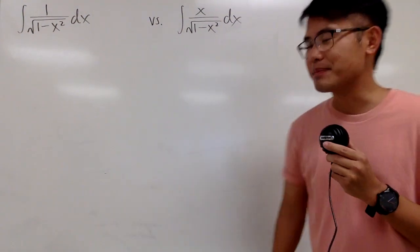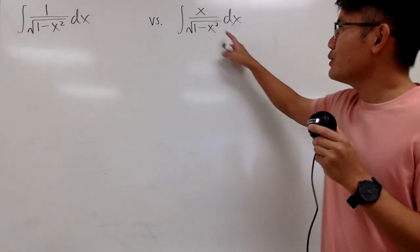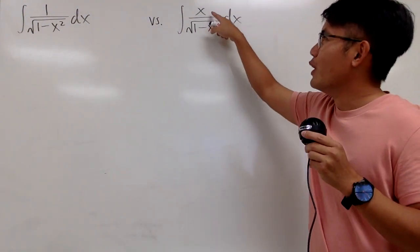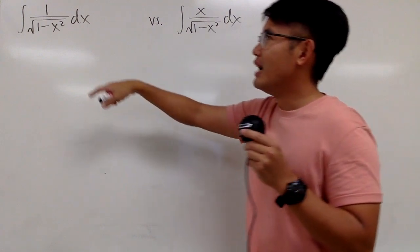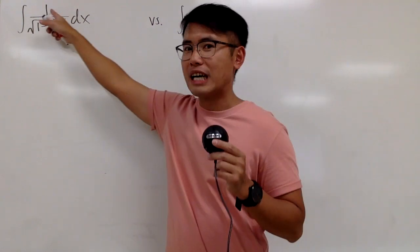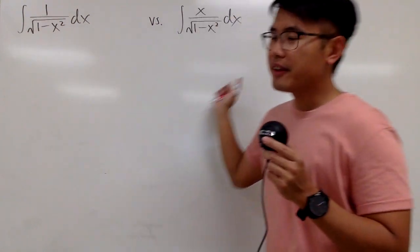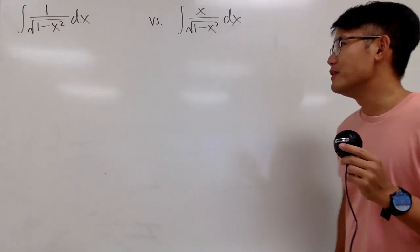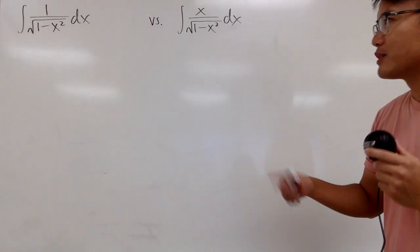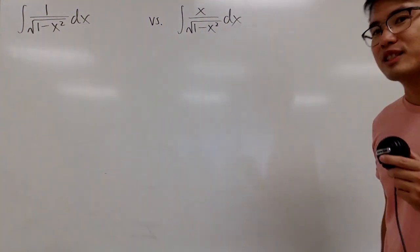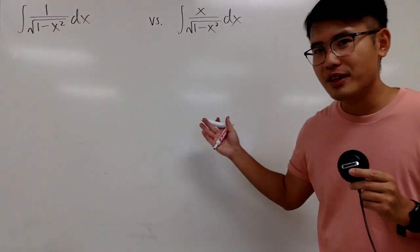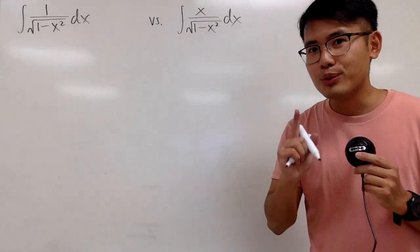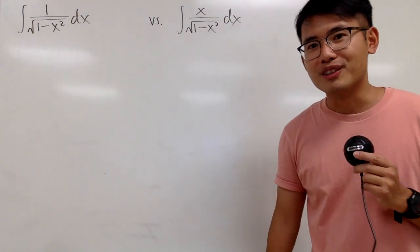We have two integrations on the spot, and notice for the second one we have this x on the top, and for the first one we just have a 1, and the denominators are the same thing — square root of 1 minus x squared. Please pause the video and try to do the easier one first.